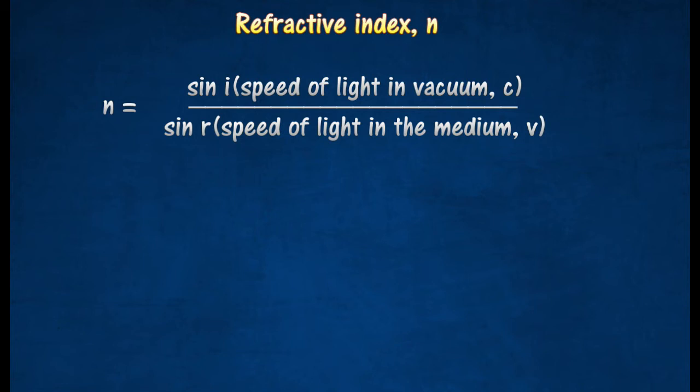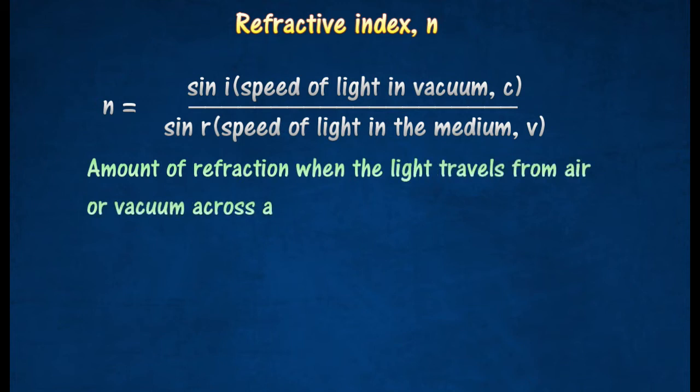N also indicates the amount of refraction when light travels from air or vacuum across a medium. It also indicates the light bending ability of a medium.